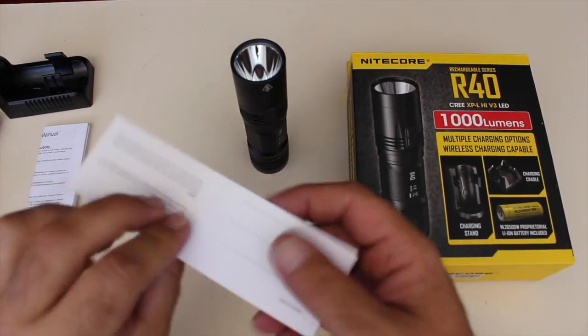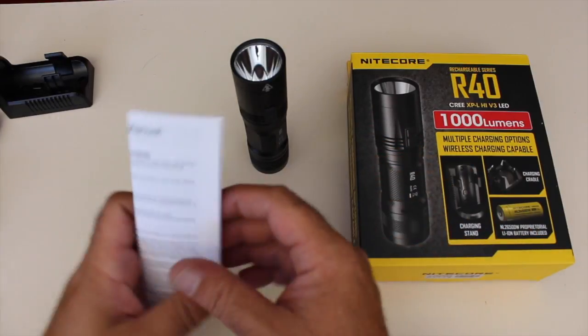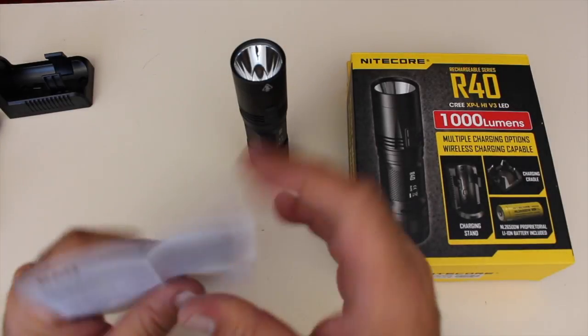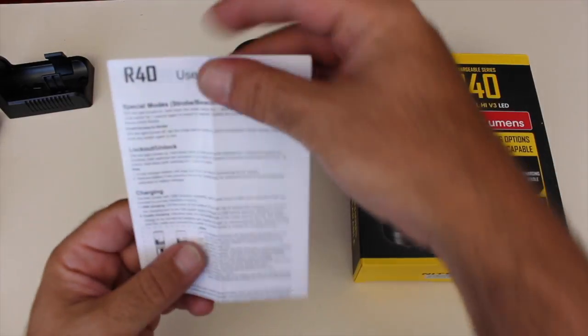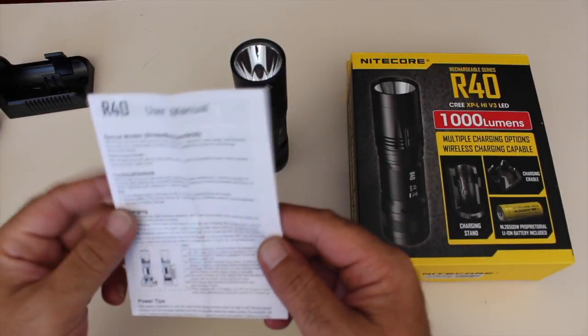You have your warranty card and owner's manual. One thing I've noticed about these owner's manuals is if they could make it small like this and actually increase the writing size, I think some people might struggle to actually read this.